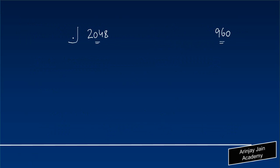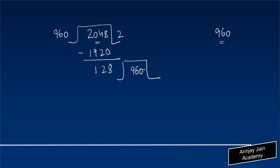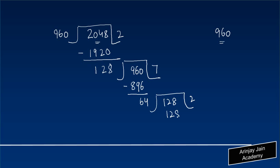We need to find the HCF of 2048 and 960. Dividing 2048 by 960: 960 goes 2 times giving 1920, subtract to get 128. Now divide 960 by 128 — it goes 7 times: 7 times 128 gives 896, subtract from 960 to get 64. Then divide 128 by 64: it goes 2 times giving 128, remainder is 0.